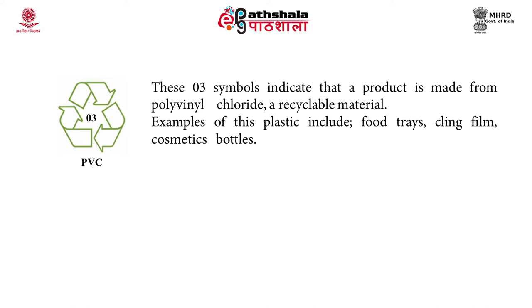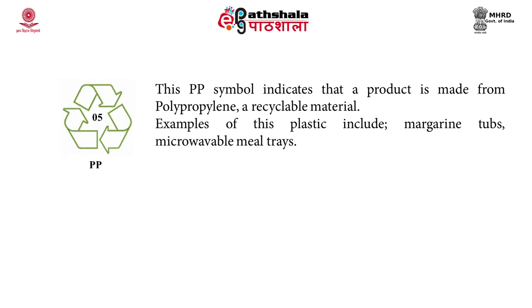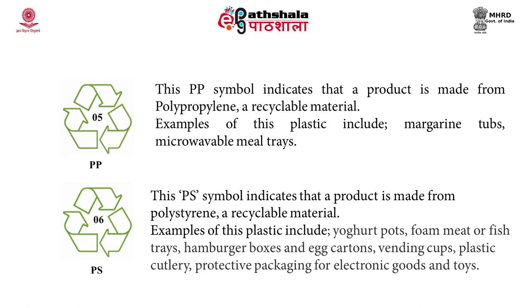Materials made from PVC include food trays, cling films, cosmetic bottles and pipes. 04 indicates low-density polyethylene (LDPE), a recyclable material used for carrier bags and bin liners. 05 indicates polypropylene, used for margarine tubs and microwavable meal trays. 06 indicates polystyrene, a recyclable material — examples include yogurt pots, foam, meat or fish trays, hamburger boxes, egg cartons, vending cups, plastic cutlery, protective packaging for electronic goods and toy packaging.